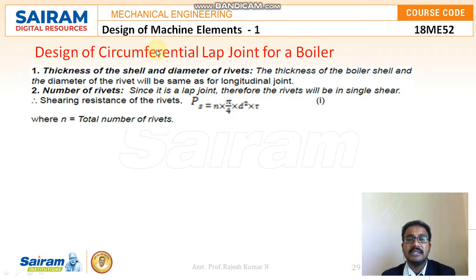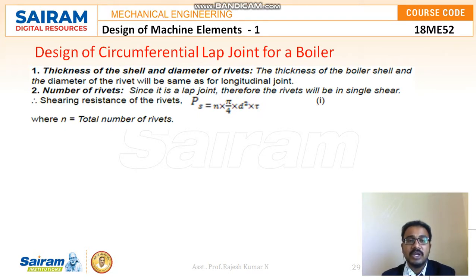The circumferential lap joint indicates where all the cylinders — the different panels, cylinder 1, cylinder 2, cylinder 3 — are overlapping each other to make the final product by inserting or overlapping with each other. The very first design step is the thickness of the shell and the diameter of the rivet, which will be the same as for the longitudinal joint.